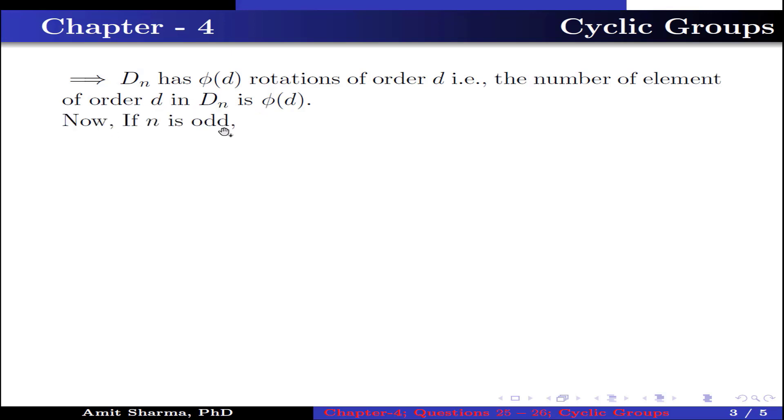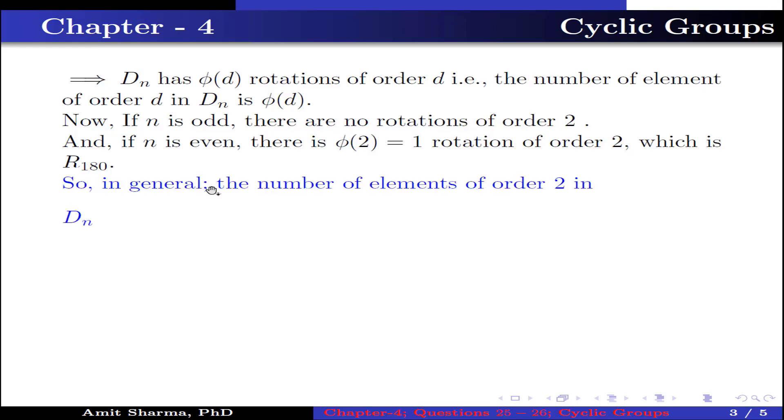If n is odd, then there are no rotations of order 2, and if n is even, there are φ(2) which equals 1 rotation of order 2, which is r_180 degrees. So in general, the number of elements of order 2 in D_n is n when n is odd and n plus 1 when n is even.